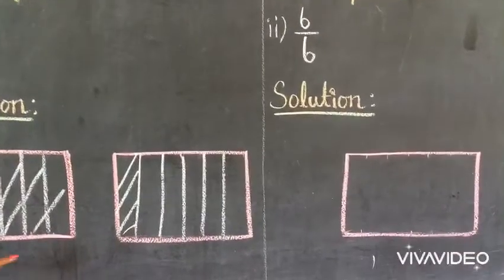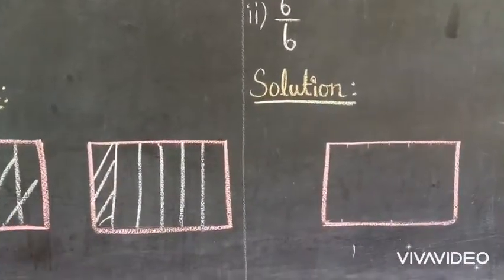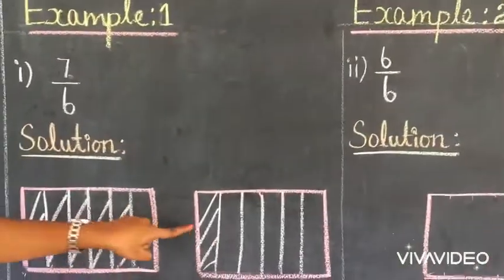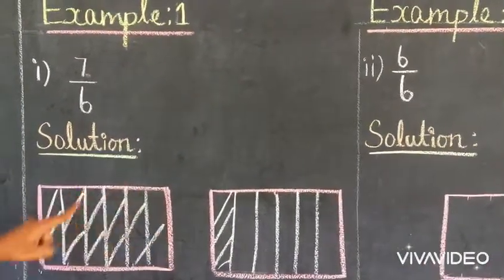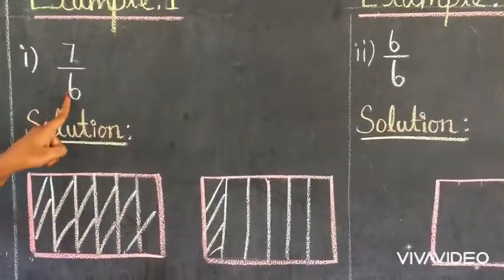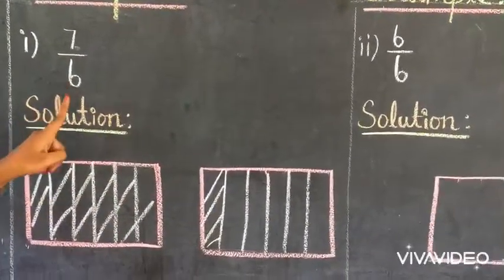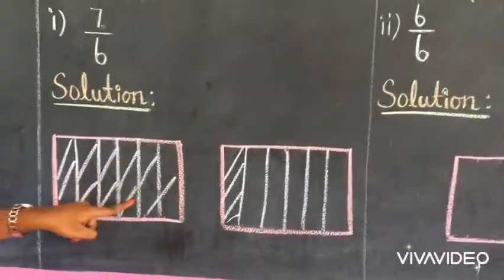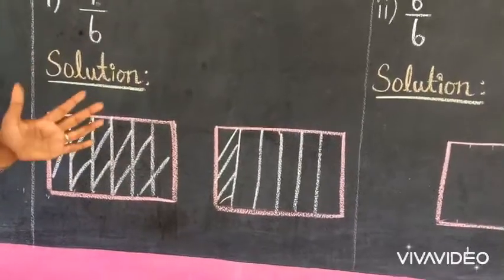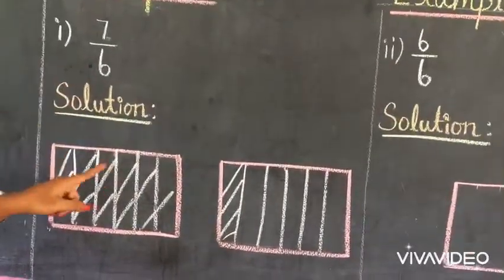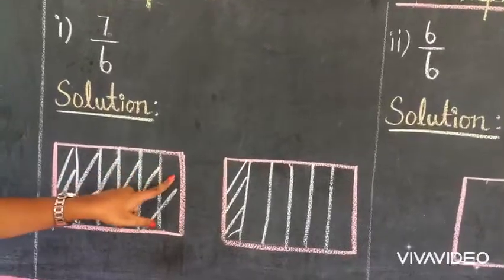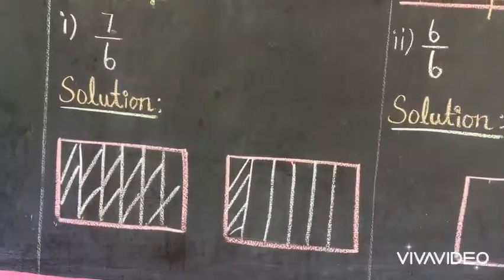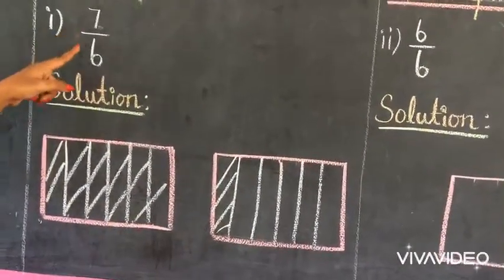What is the fraction of the shared part here? 7 by 6 — not 7 by 12. Because here each thing is divided into 6 parts, so the denominator is 6. You can see the colored part of the fraction: 7 by 6. So here the denominator is 6. It is an improper fraction.